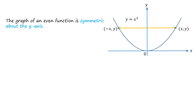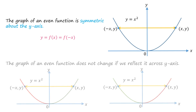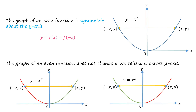The graph of an even function is symmetric about the y-axis. This is because, in the case of an even function, the value of y is the same for x and negative x. The graph of an even function does not change if we reflect it across the y-axis.